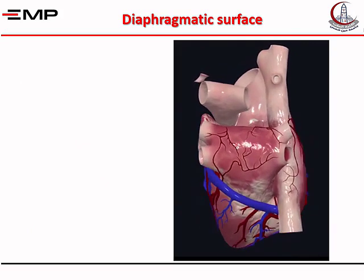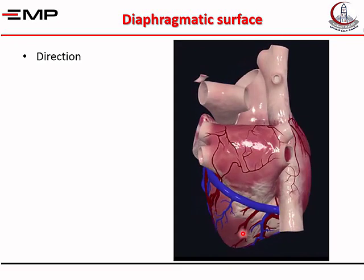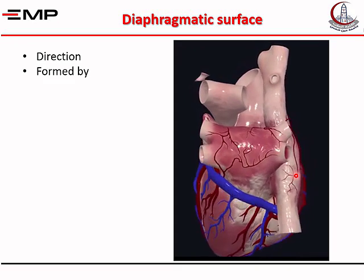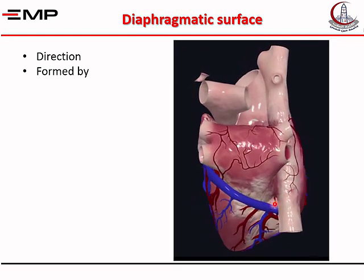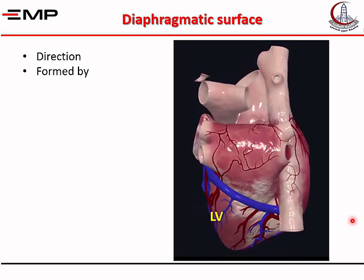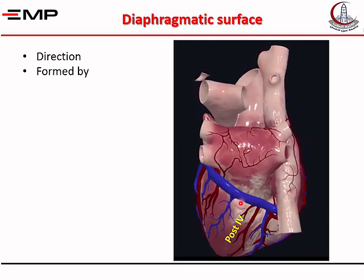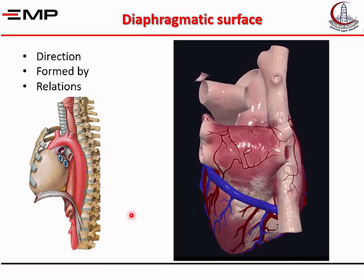The third surface is the diaphragmatic surface. It faces downwards and backwards, slightly to the right. It is made of the two ventricles only. The base is made by the two atria, and the diaphragmatic surface is made by the two ventricles — mostly by the left ventricle, with a slight extent by the right ventricle — separated from each other by the posterior interventricular groove. Its relation is to the diaphragm.